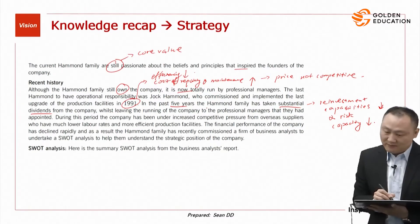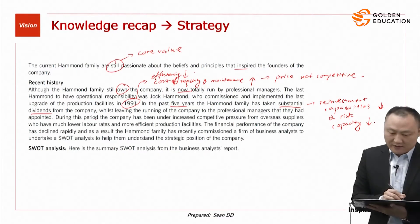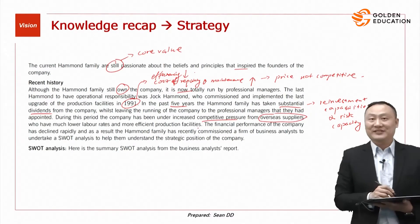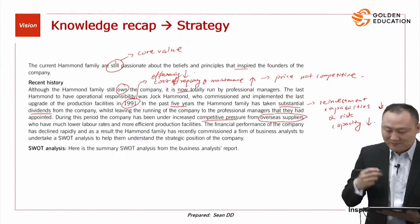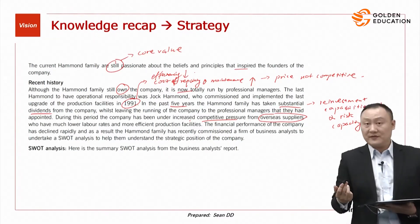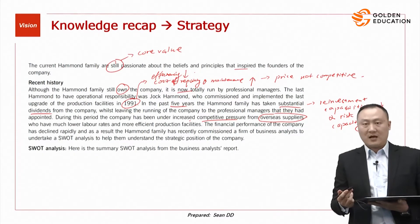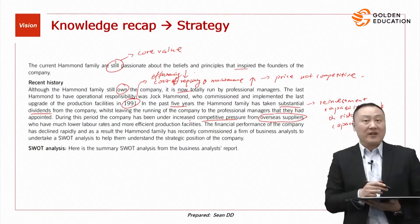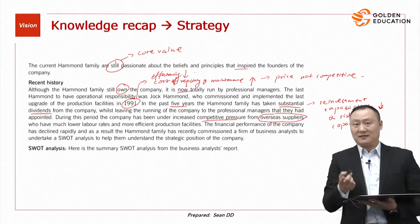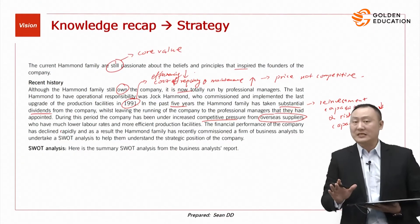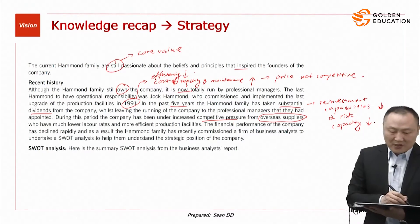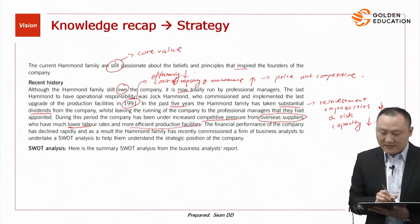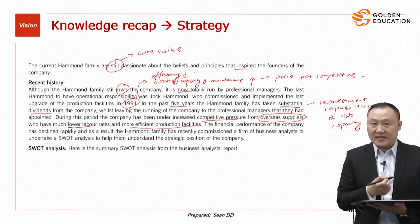While leaving the running of the company to professional managers, the company has been under increased competitive pressures from overseas suppliers. Those pressures are mainly from price — if overseas suppliers come from developing, labor-intensive countries, their costs are generally lower. Since footwear does not carry much differentiation, the business is in danger. These overseas suppliers have lower labor rates and more efficient, more advanced production facilities than Harman.